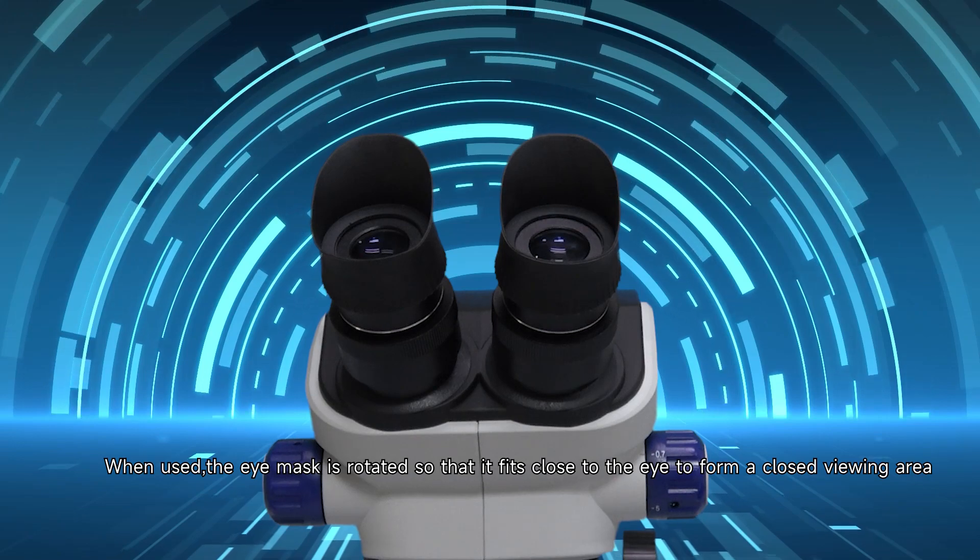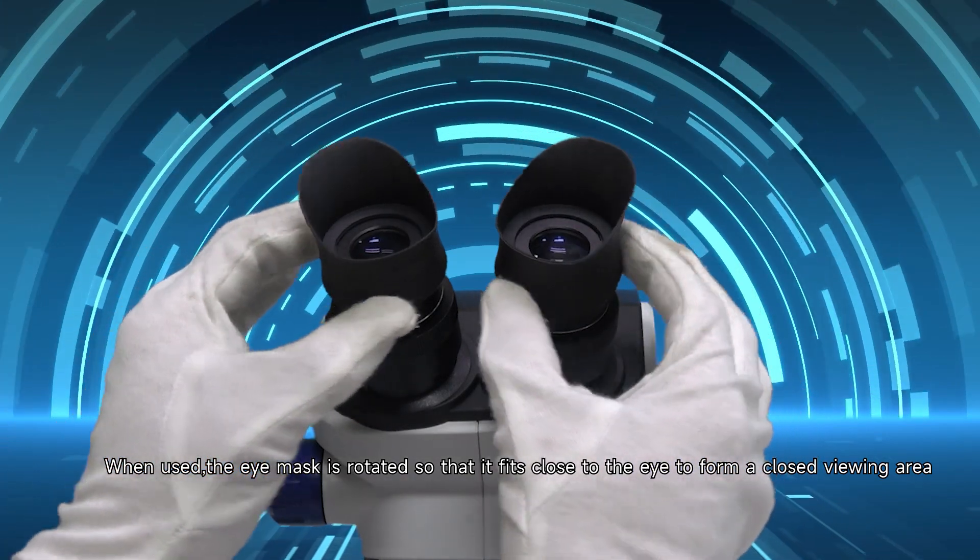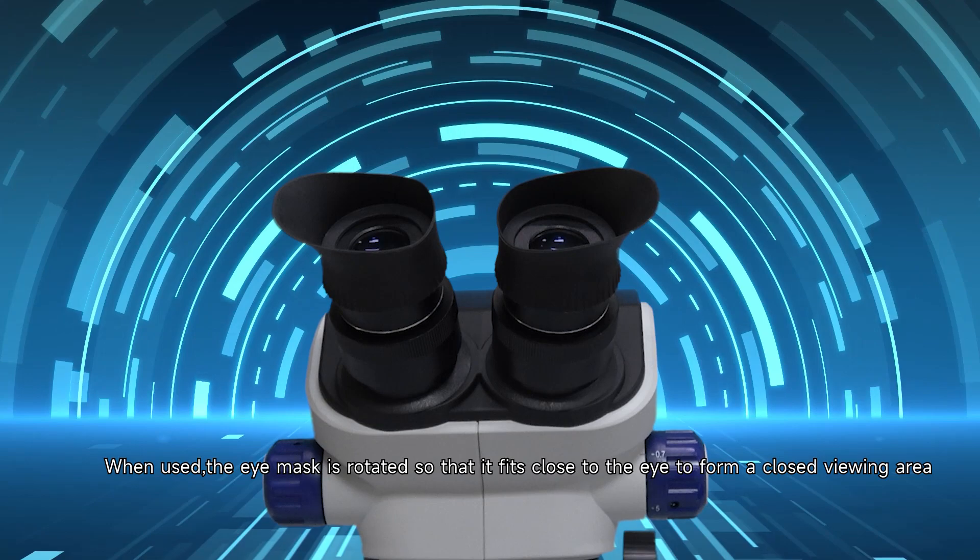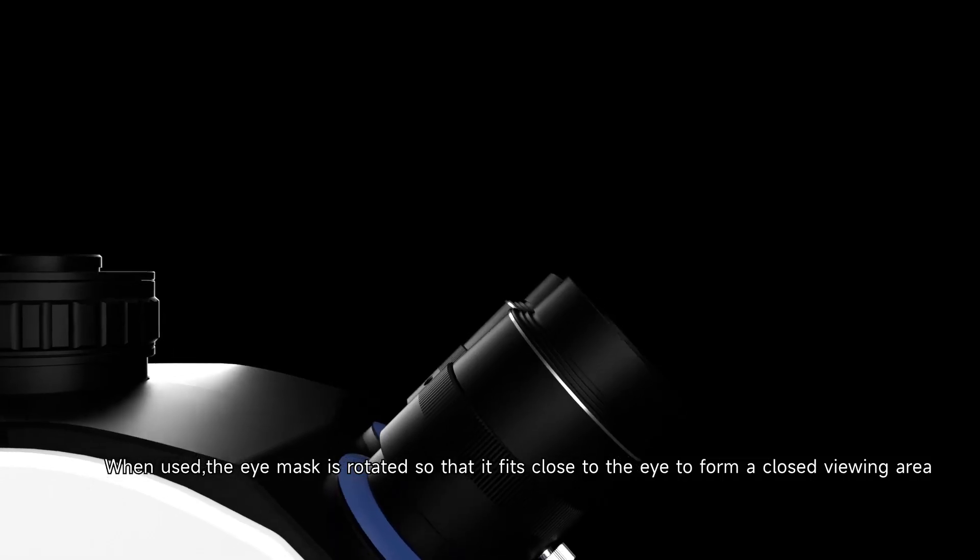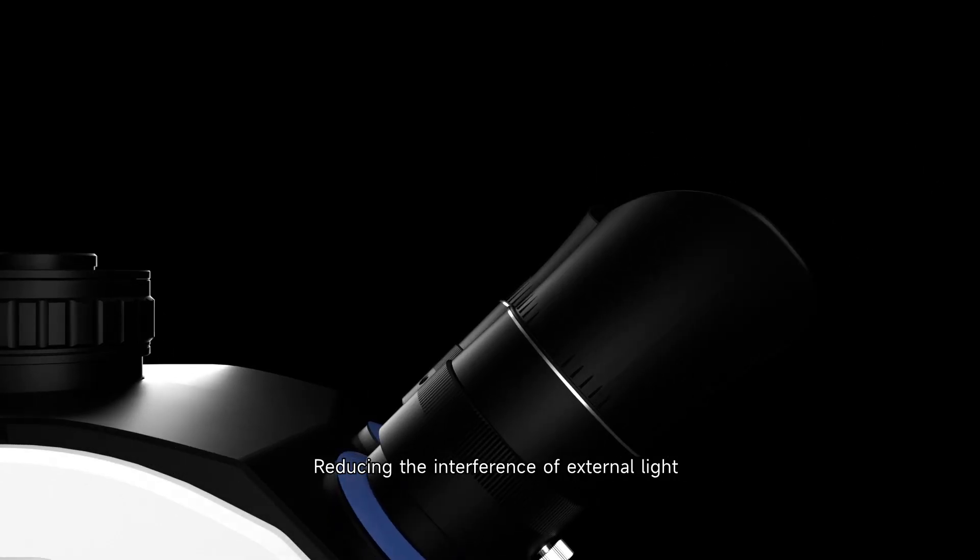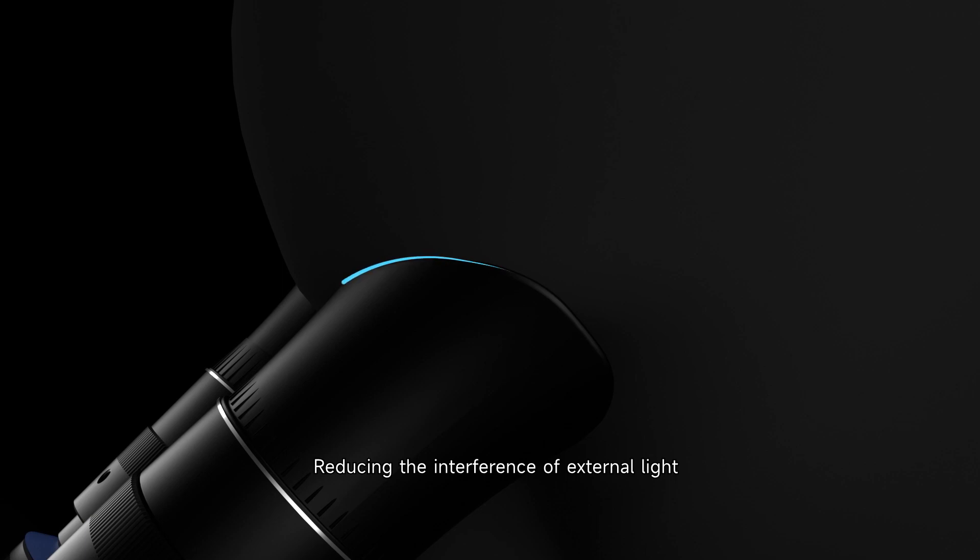When used, the eye mask is retracted so that it fits close to the eyes to form a closed viewing area, reducing the interference of external light.